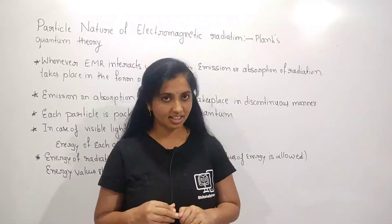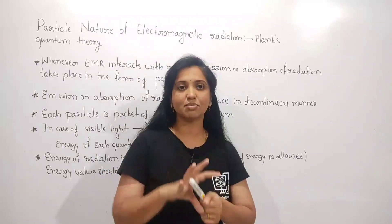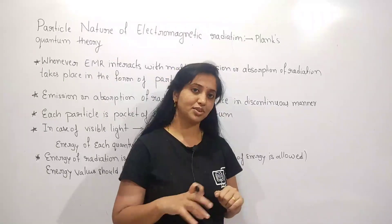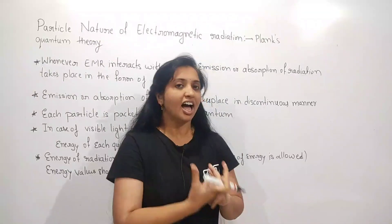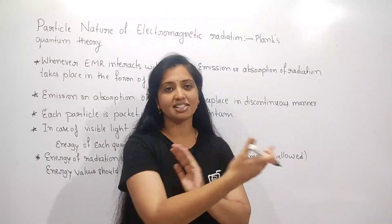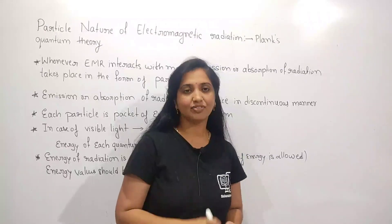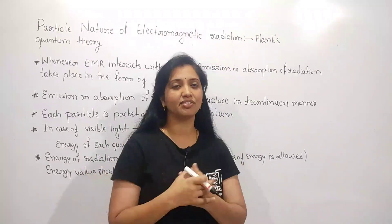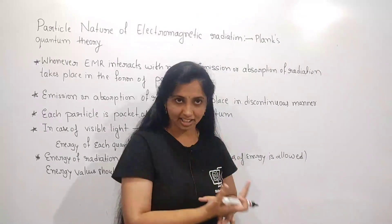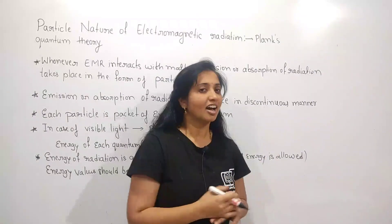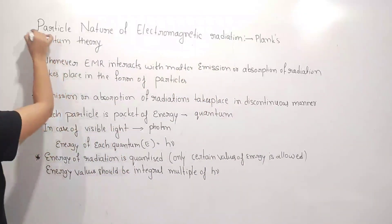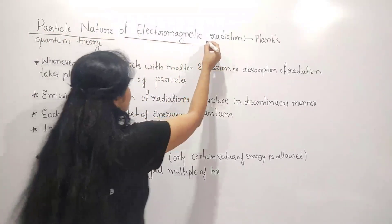In the dual nature of electromagnetic radiation, 'dual' means double. Electromagnetic radiation behaves like both a wave and a particle. In the previous class, we studied in detail about the wave nature of electromagnetic radiation and its spectra. In today's class, I wish to discuss the particle nature of electromagnetic radiation.